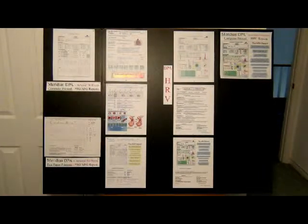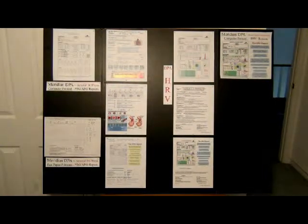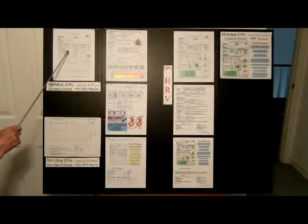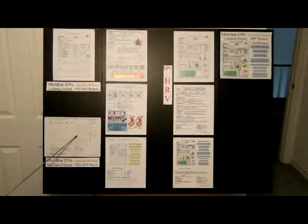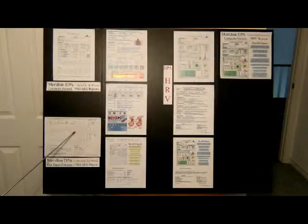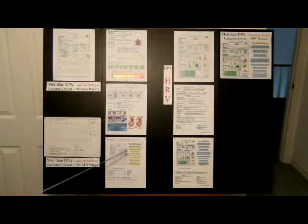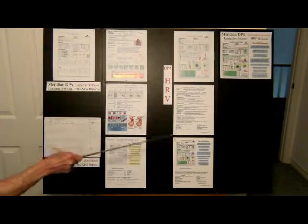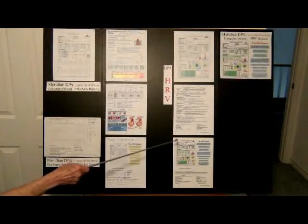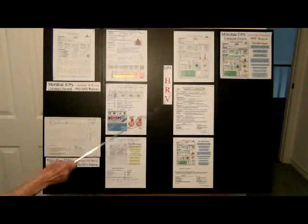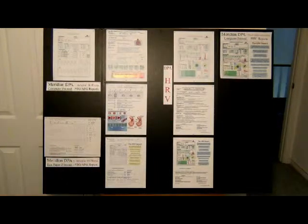What we're looking at here are the reports for the Meridian DPA. Right here we have the report for arterial stiffness. Here's the fax paper printout report that comes out without a computer, here's an interpretive guide, and over here we have the heart rate variability reports. We'll go through all of these in more detail now.